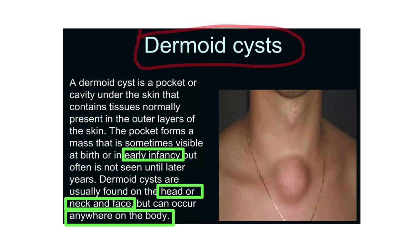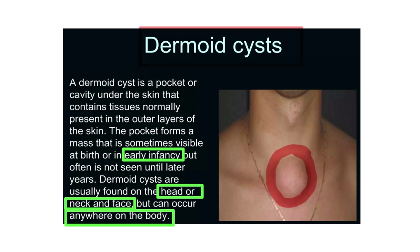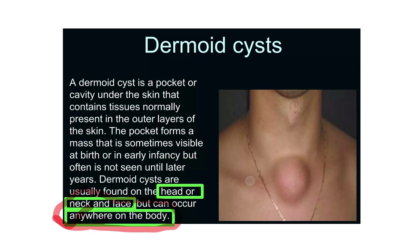The answer is dermoid cyst. A dermoid cyst is a cyst usually located in embryological fusion areas — such as the midline and other areas where embryological fusion is present. It usually presents in early childhood and can occur in the head, neck, face, and anywhere in the body where an embryonic fusion line is present.